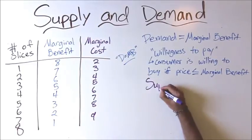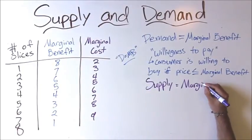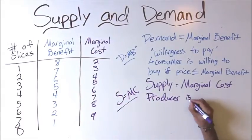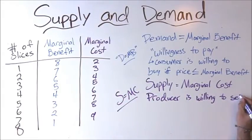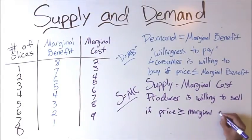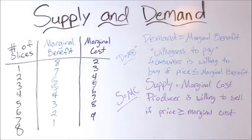Our supply curve is the relationship between price and quantity supplied, where marginal cost is equal to price for a given quantity supplied. A producer is willing to sell if price is greater than or equal to marginal cost, and producers also get a surplus. Once again, be aware of the difference between supply and quantity supplied.